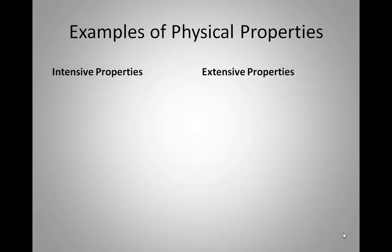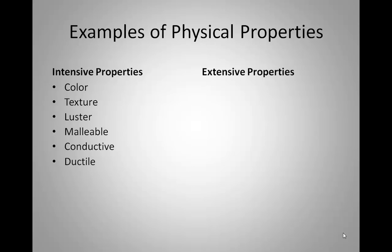Some examples of intensive properties — properties that do not change with the amount of substance. You can observe color, texture, and luster (that's how well something reflects light, how shiny it is). Whether or not it's malleable — if it can be molded and shaped. If it's conductive of electricity, or ductile — meaning it can be hammered out without shattering. Its density — basically how much mass is in a given unit of volume — that ratio won't change no matter how much substance you have. Boiling point and melting point are also examples.